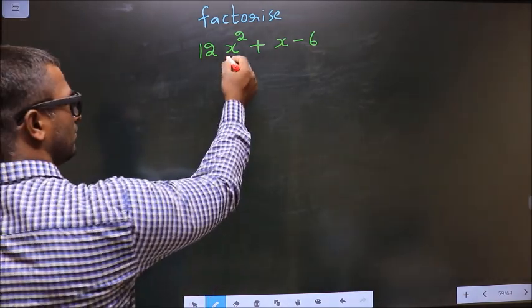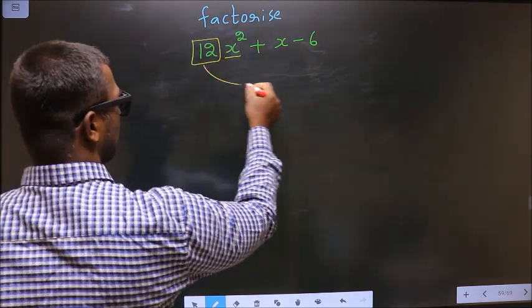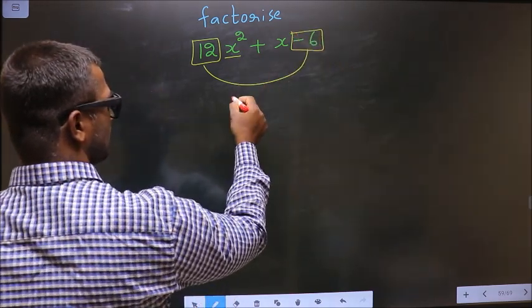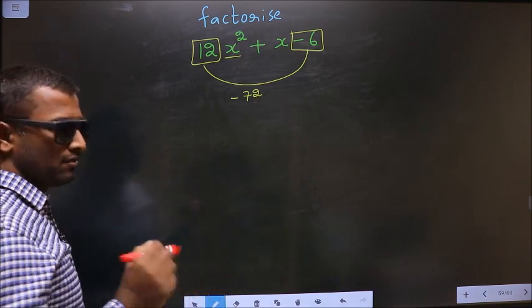The coefficient of x², which is 12, should be multiplied to the constant, which is -6. So 12 × -6 = -72. This is your step 1.